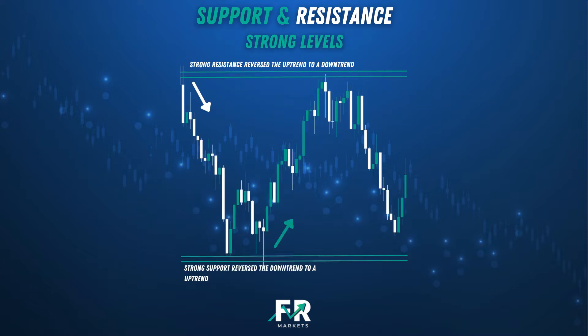When looking at support and resistance, there are strong levels and minor levels. Support is a level that price has struggled to go below and resistance is a level that price has struggled to go above. The strength of a support and resistance level can be determined by the strength of the price reaction off it. Any price area that reverses a trend is a strong support or resistance level. As you can see on the screen, price was moving down to a support level and it reversed the trend completely — that's how we know where a strong support level is.